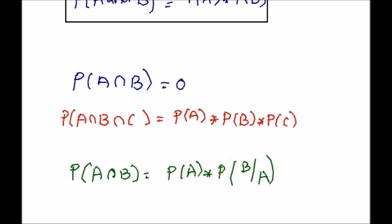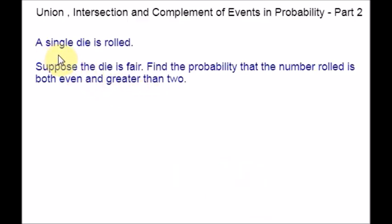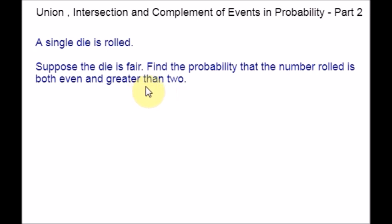Here is an example. A single die is rolled. Suppose the die is fair. Find the probability that the number rolled is both even and greater than 2. This question is asking about the intersection of two events. Let E be the event of getting an even number, and T be the event of getting a number greater than 2. Whenever you get questions like this, first you have to define the events, identify what the question is asking — whether union, intersection, or complement — then write the appropriate formula and work out according to the formula.